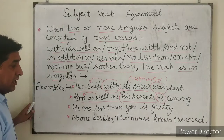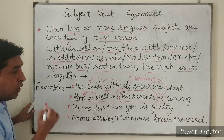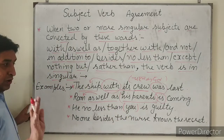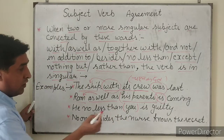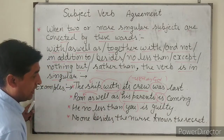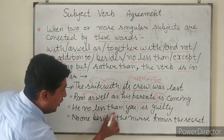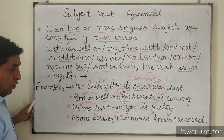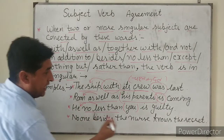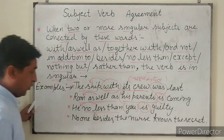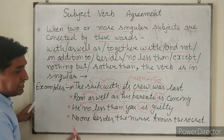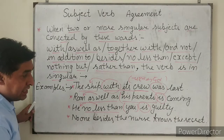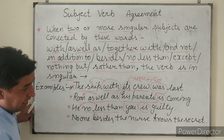Another example: 'No less than you' — when subjects are joined by 'no less than,' the verb agrees with the subject that comes before it. And: 'No one besides the nurse knows the secret' — here 'besides' connects the subjects, and the verb 'knows' agrees with the first subject 'no one,' which is singular.